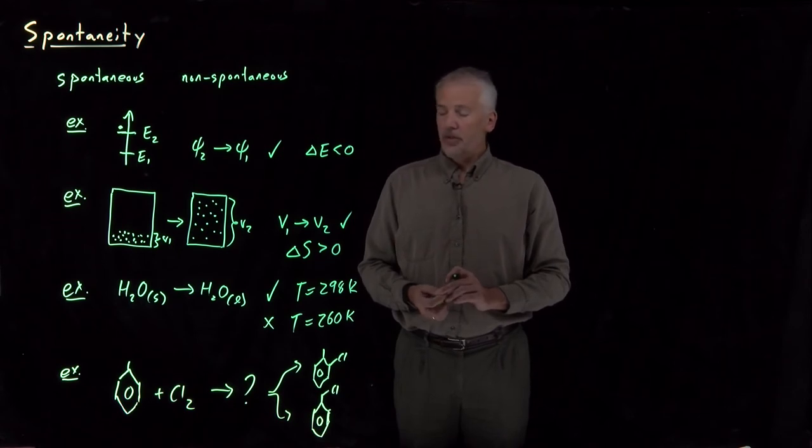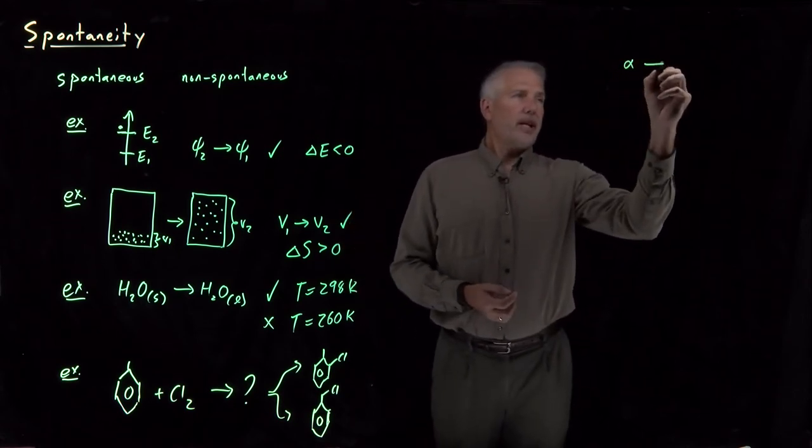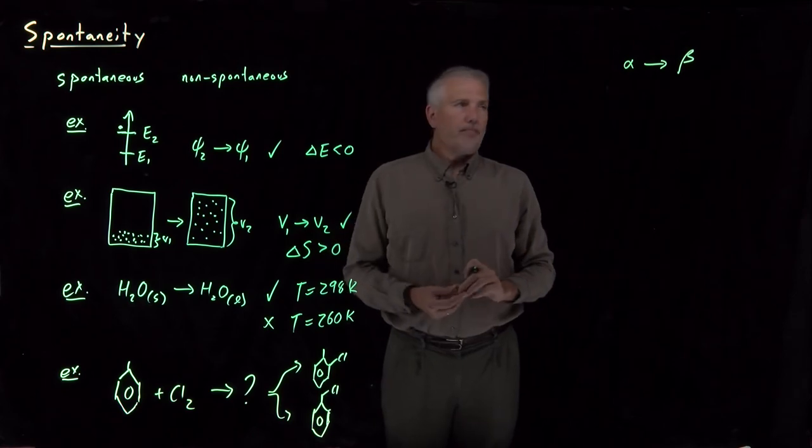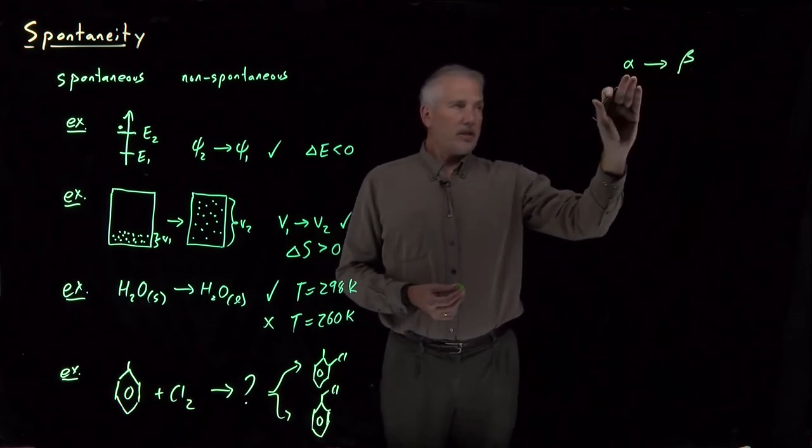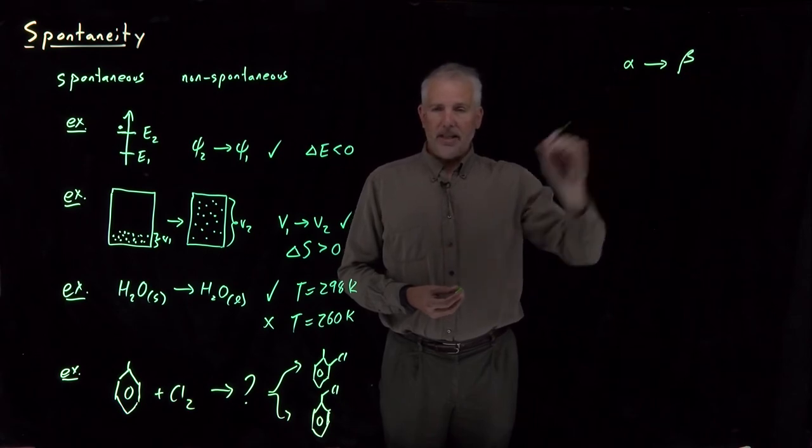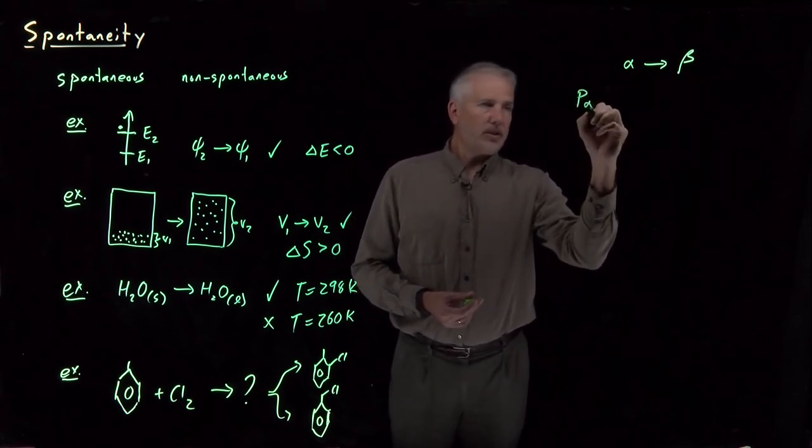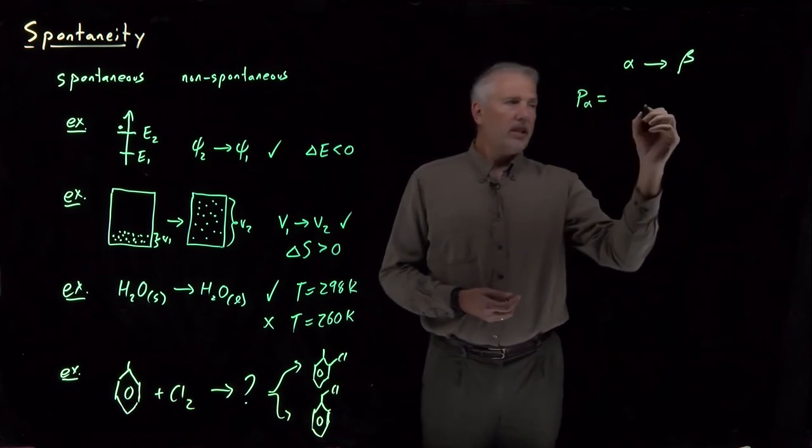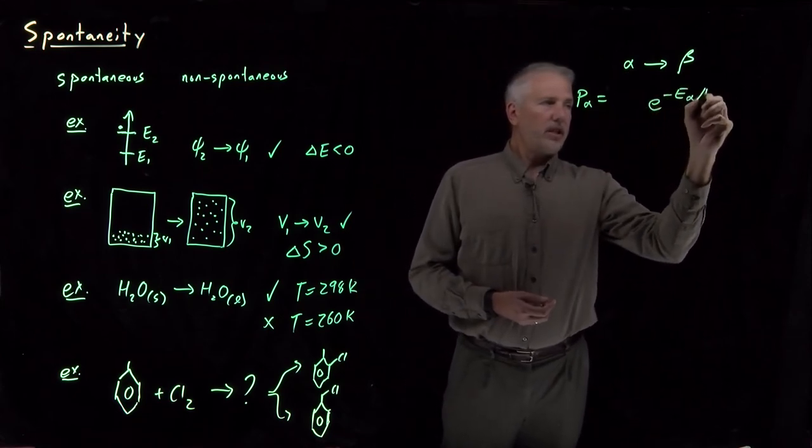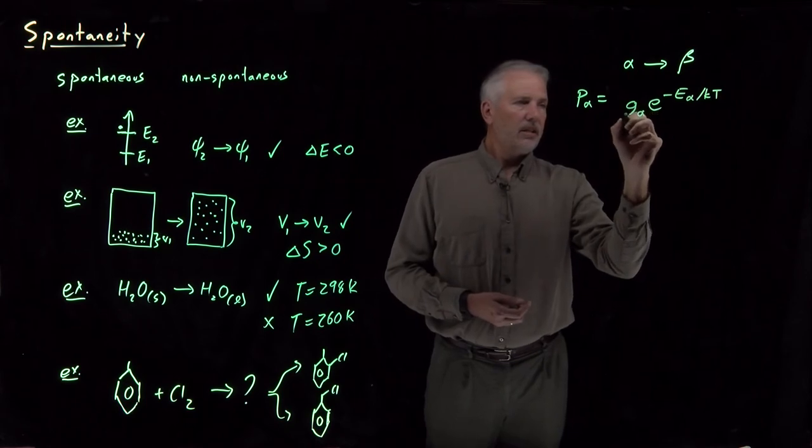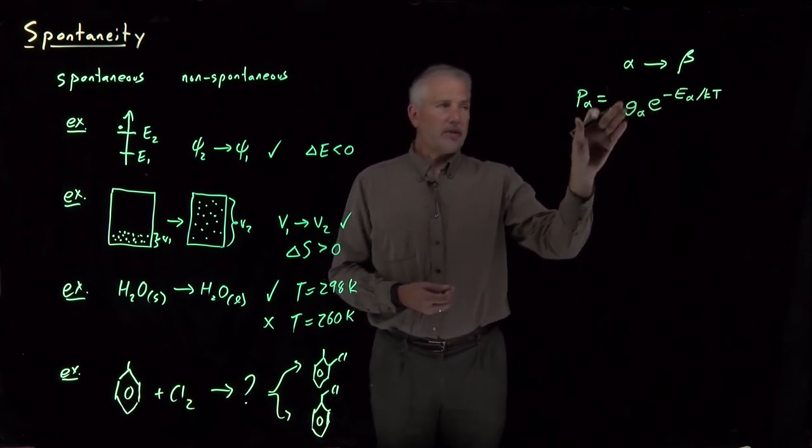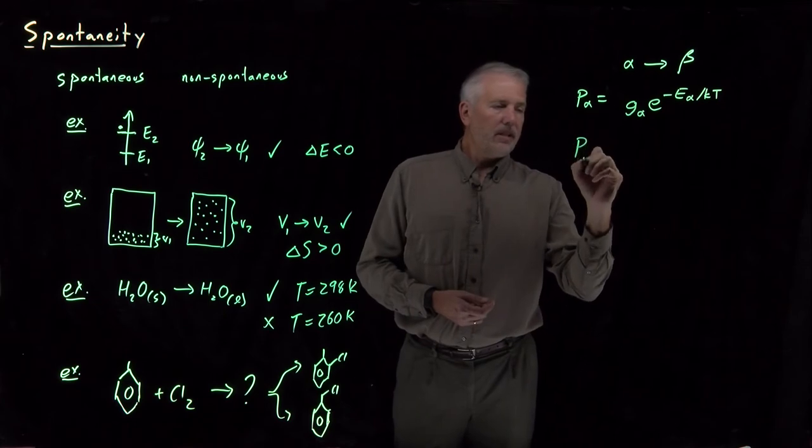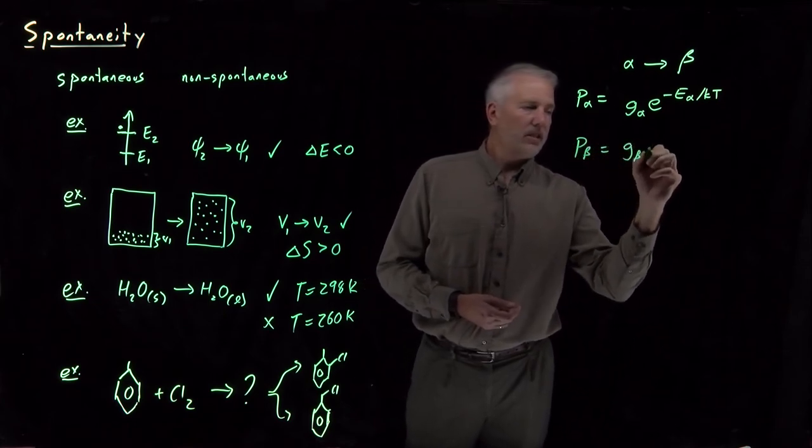But from a physical chemistry point of view, if we take a step back and ask for any process, whether it's a phase change, a chemical reaction, volume change, whatever it is, we want to ask, is some state, is this process alpha turning into beta, is that a spontaneous process or not? We have an easy way to answer that question. Boltzmann tells us that the probability of this state, the alpha state, is e to the minus energy of that state over kT. And let's not forget that there might be some degeneracy. So the alpha state might have a degeneracy that's not just one, so we'll include that possibility. The beta state has its own degeneracy and its own energy.